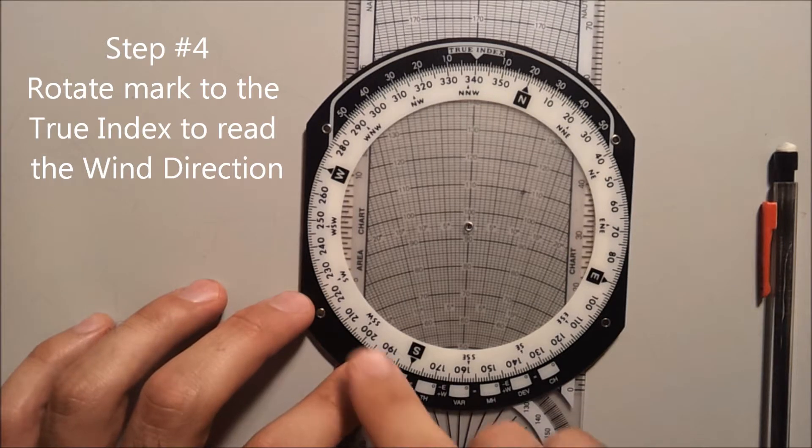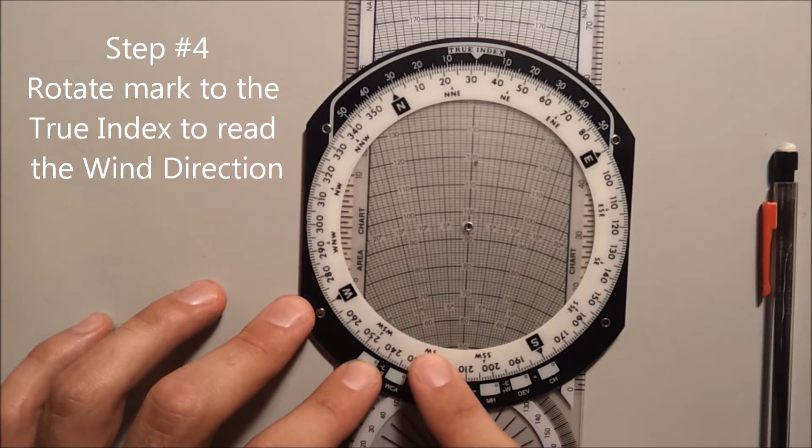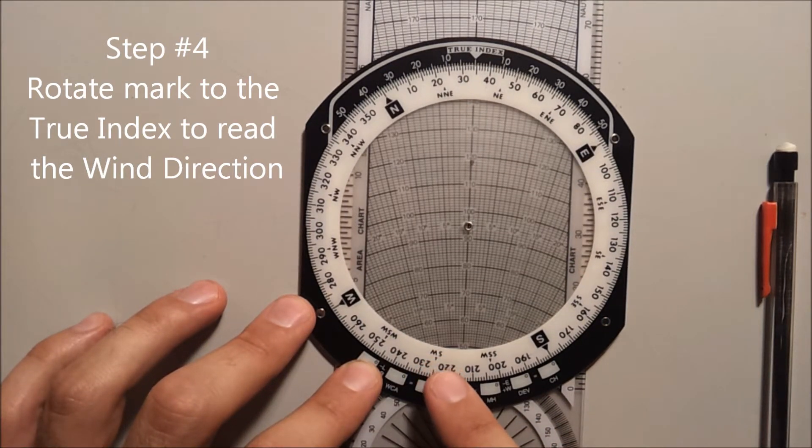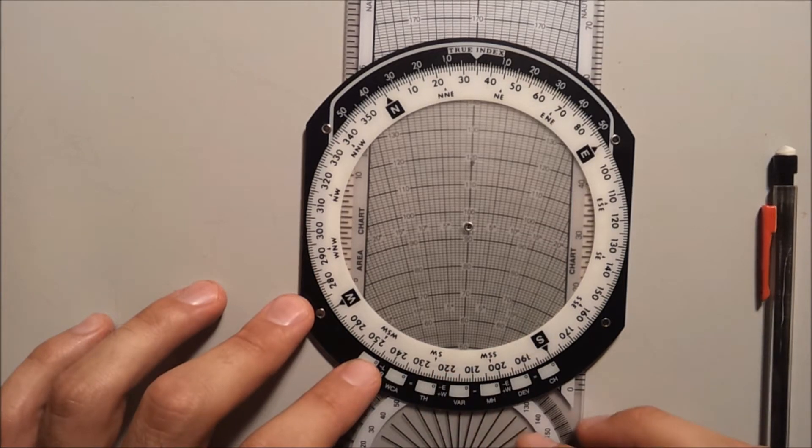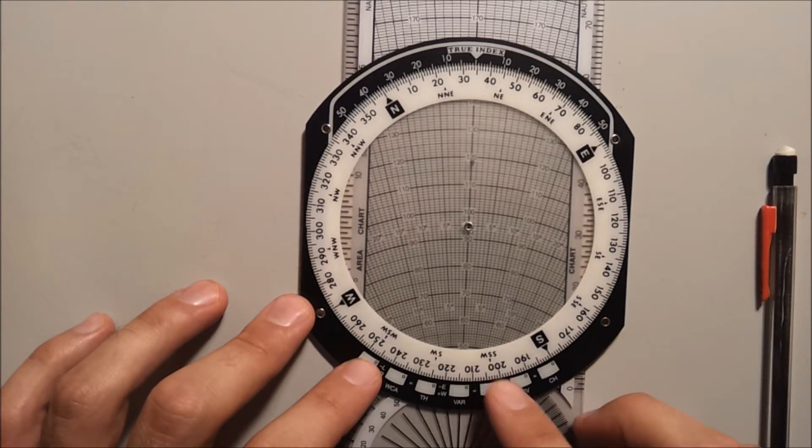Rotate your mark to the true index and read your wind beneath the true index. In this case, 035 degrees.